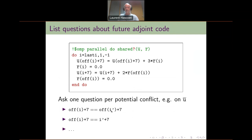Next, we look at the reverse-differentiated loop, which has a shape that is not very intuitive. We see that we have write accesses to u-bar here and there, and they might be in conflict. So we need to ask questions about these conflicts: could we prove that for two different indices i and i-prime, of(i) plus seven is different from of(i-prime) plus seven? We also need to check whether those two accesses might conflict, which boils down to whether i plus seven could equal i-prime plus seven.